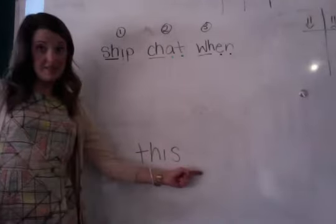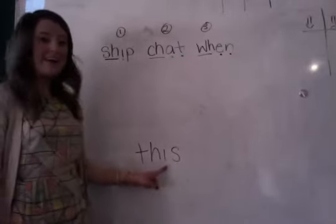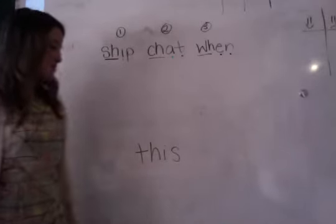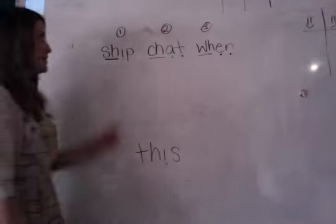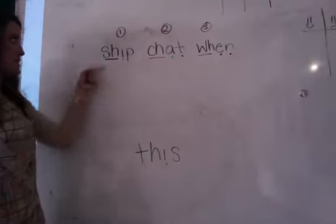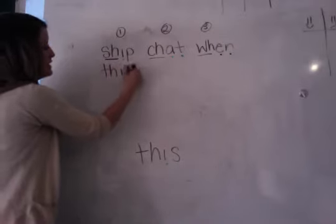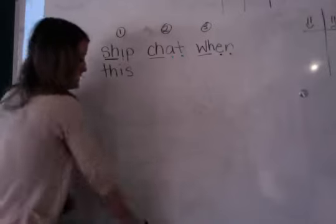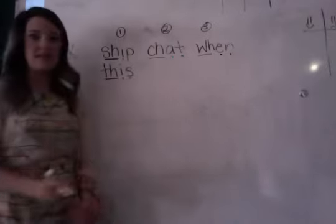This is the word this. Let's say our sounds together: Z, I, S — this. What does this letter say? I — very good, just like in ship. Write this under ship: Z, I, S — this. Now let's dot and dash: Z, I, S — this.